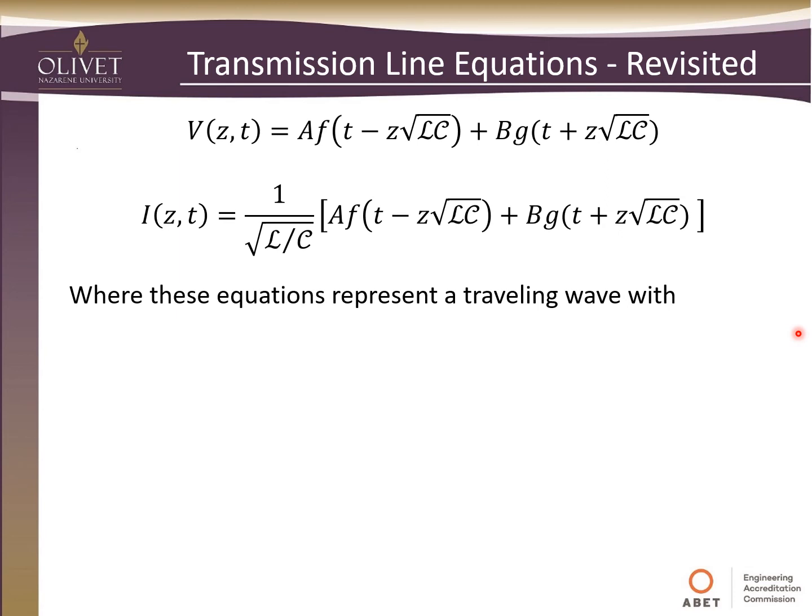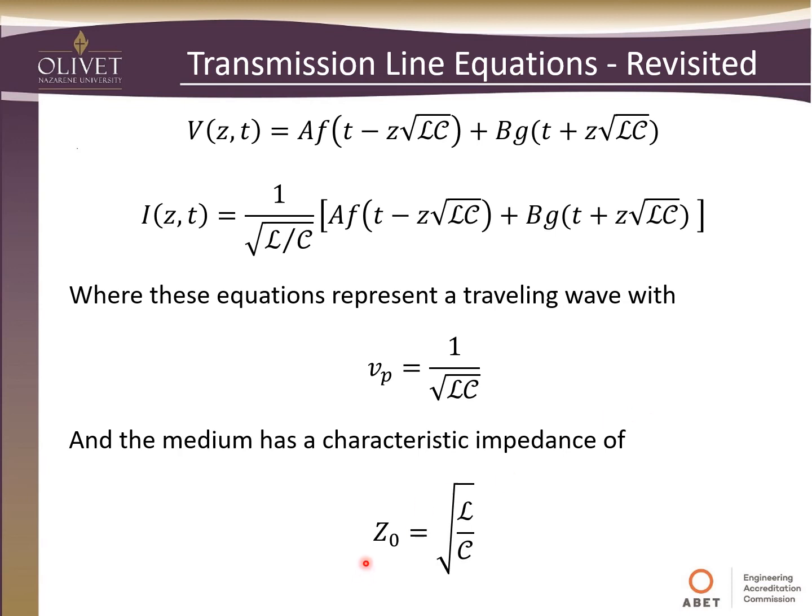Where these equations represent a traveling wave, we can define the phase velocity, which is one over the square root of the per unit inductance and capacitance. The medium has a characteristic impedance Z₀, which we've talked about before: the square root of the per unit inductance divided by capacitance.